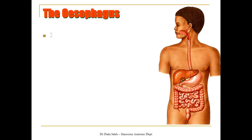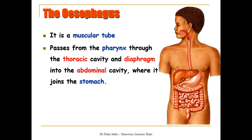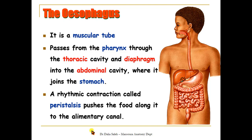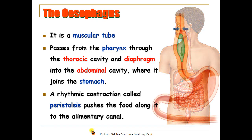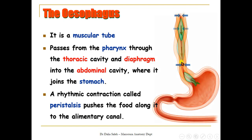Next we have the esophagus, a muscular tube extending from the end of the pharynx down to the beginning of the stomach. It passes through the thoracic cavity and part of it lies inside the abdominal cavity. Its rhythmic contractions, called peristalsis, push the food along it into the alimentary canal and downward into the stomach.